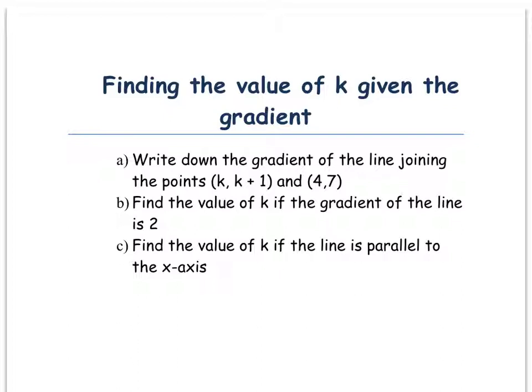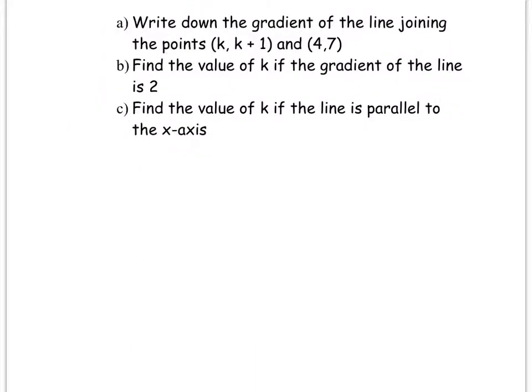Write down the gradient of a line joining the point k, k plus 1, and 4, 7. Remember, to find the gradient of two points, gradient is the change in y divided by the change in x.